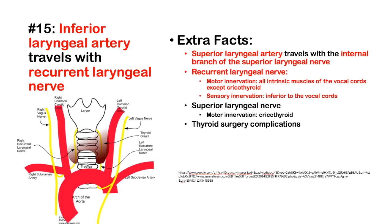Number 15: The inferior laryngeal artery travels with the recurrent laryngeal nerve. The recurrent laryngeal nerve provides motor innervation to all intrinsic muscles of the vocal cords except the cricothyroid, and provides sensory innervation inferior to the vocal cords. The superior laryngeal nerve provides motor innervation to the cricothyroid — this is a commonly tested distinction. Unilateral severing of the recurrent laryngeal nerve typically causes hoarseness, while bilateral paralysis is a medical emergency requiring tracheotomy. The left recurrent laryngeal nerve wraps under the arch of the aorta, while the right branches more superiorly.